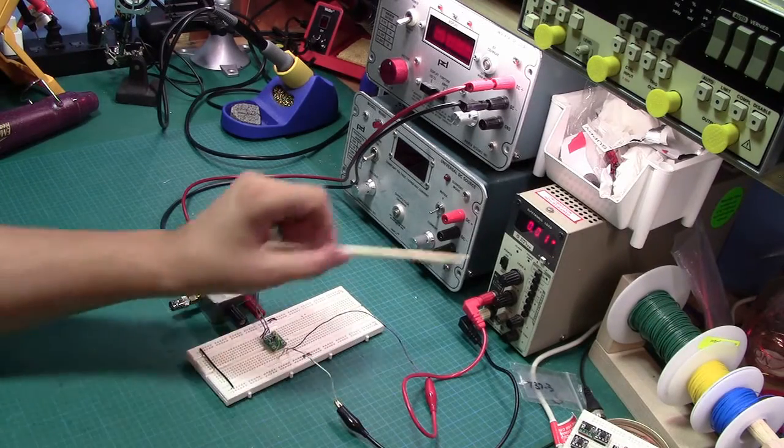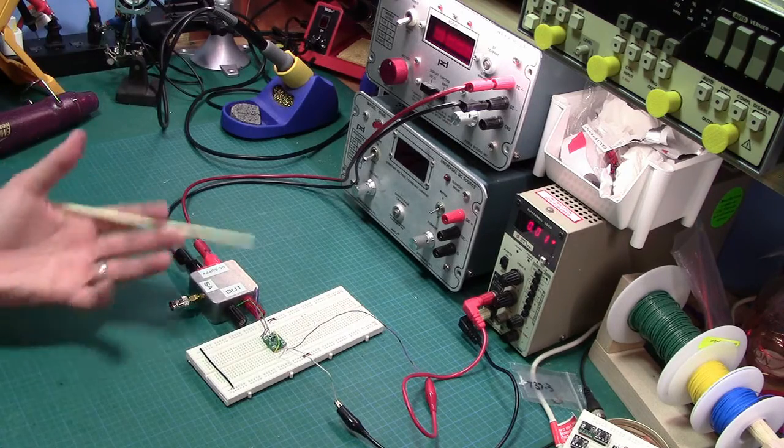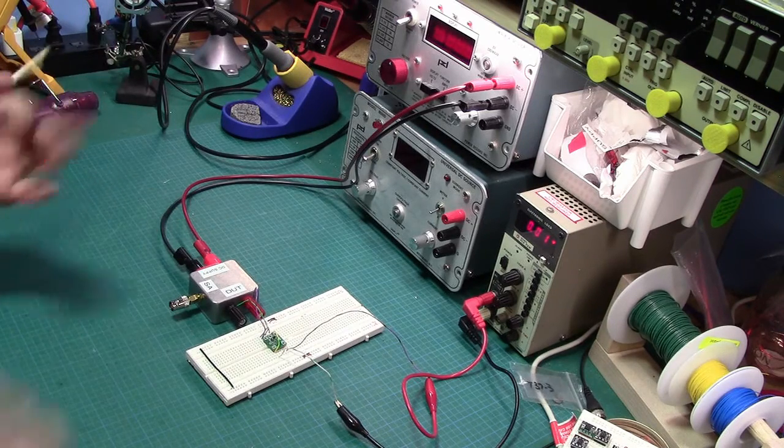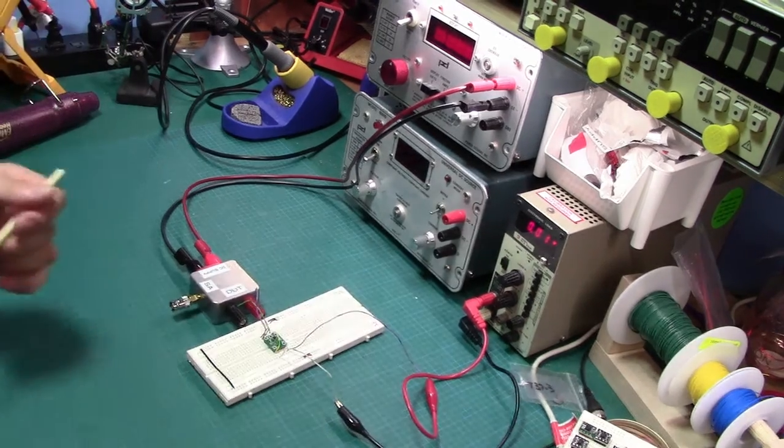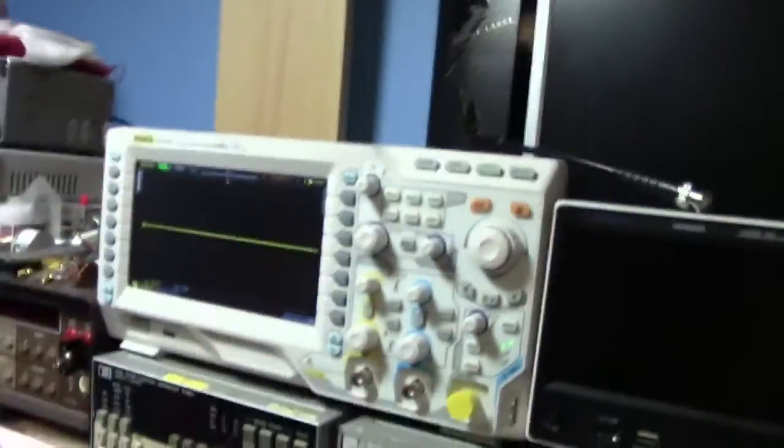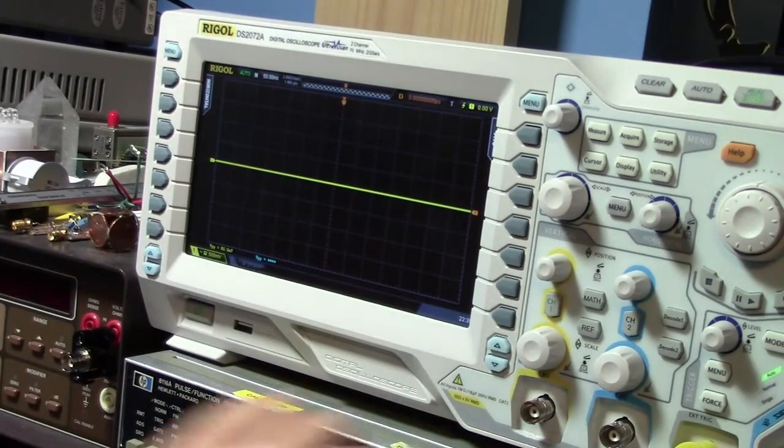The output of this is going into a load so I can actually load this down and have the switcher do some real hard work. So the only other piece that's missing is a connection up to my stand-in spectrum analyzer which is not a spectrum analyzer at all. It's going to be my scope.